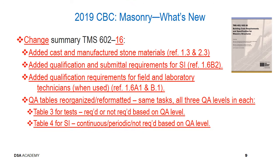Moving on to the TMS 602, the specification for masonry structures. New materials have been added to reference cast and manufactured stone materials in articles 1.3 and 2.3. Qualification and submittal requirements for the special inspector have also been added — see section 1.6. This is of interest to project inspectors, though some requirements will be verified by the lab manager. There are also added qualification requirements for field and laboratory technicians; see articles 1.6 and B1 for further information.